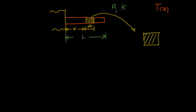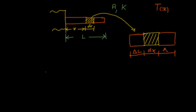I am also going to consider another small region to the left and another small region to the right of the main small region. The central region has length dx. The region on the left has length del L. I am interested in finding the rate of heat entering this small region — specifically through the left boundary.